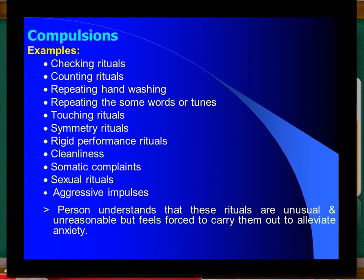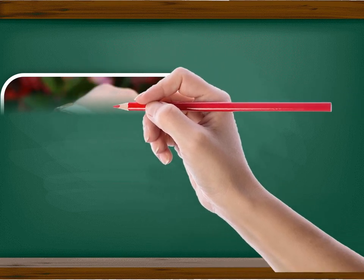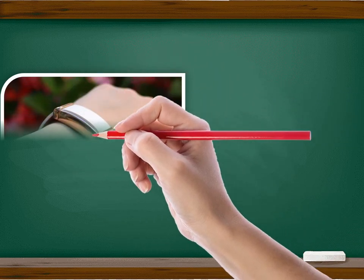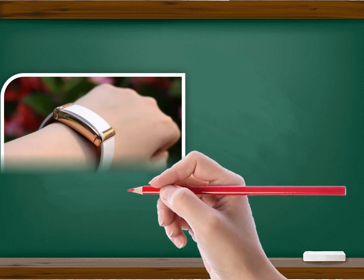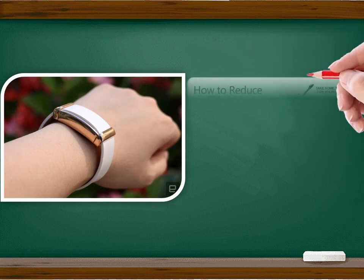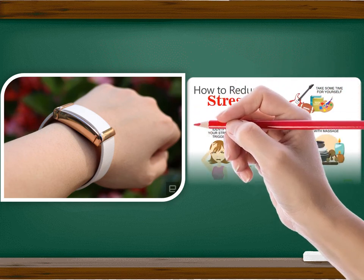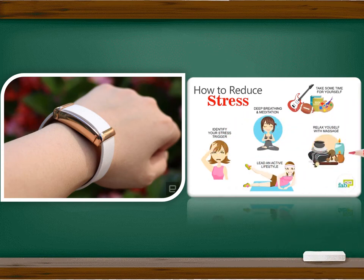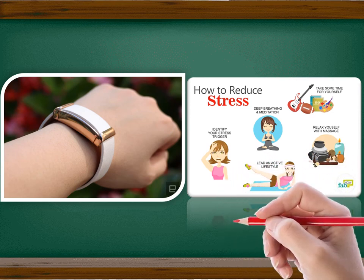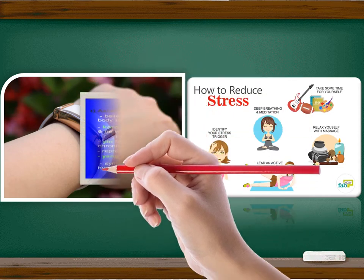Dissociative identity disorder serves as a defense against extreme anxiety. Splitting off allows the child to survive trauma, but leaves an impaired personality with disconnected parts or alters. Each personality alter has its own name, behavior traits, memories, emotional characteristics, and social relations. The most common personality is a fearful, terrified child, and the next most common is a persecutor modeled on the abuser. Child abuse is almost always a part of DID, and the trauma is usually severe sexual abuse that overwhelms the child's non-dissociative defenses. The abuse experience is dissociated, and aspects of it later appear in the form of various personalities.